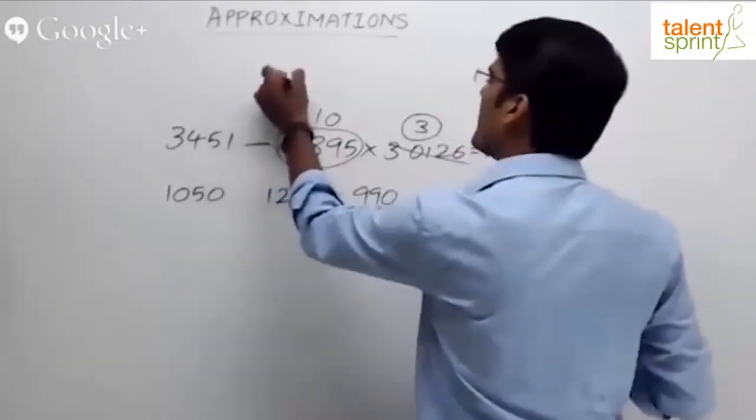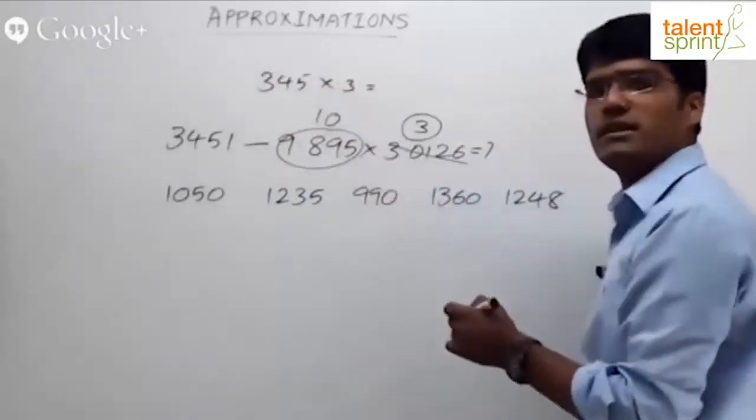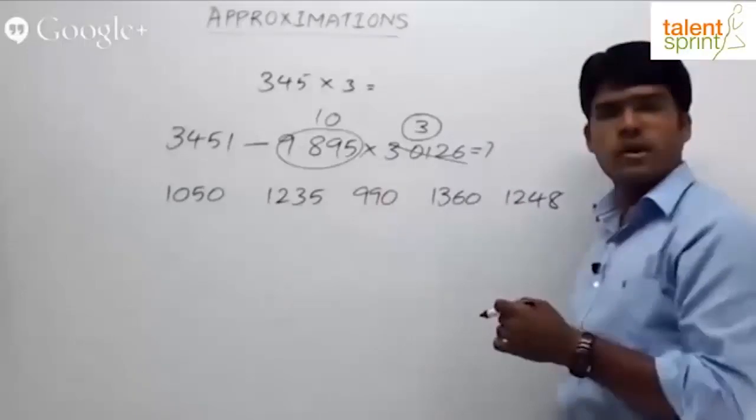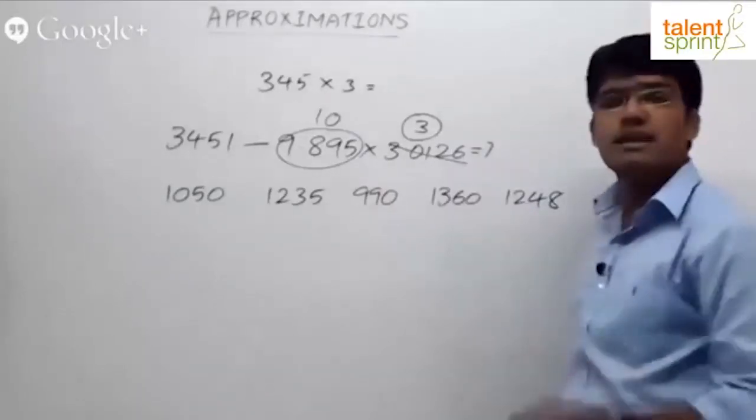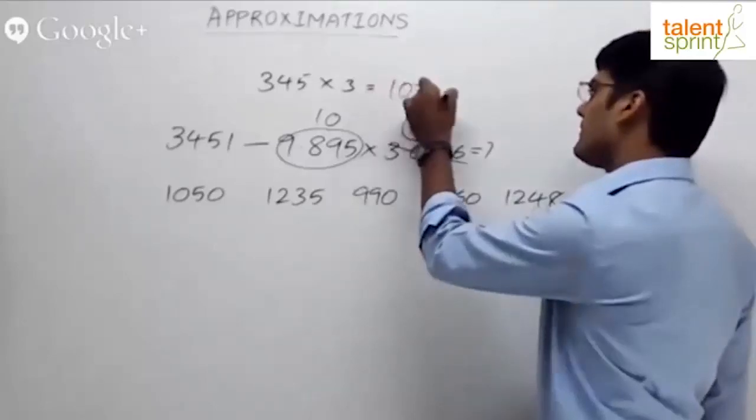So 345 into 3. What is 345 into 3? 340 into 3 is 1020. 5 into 3 gives 1035. So answer should be close to 1035.